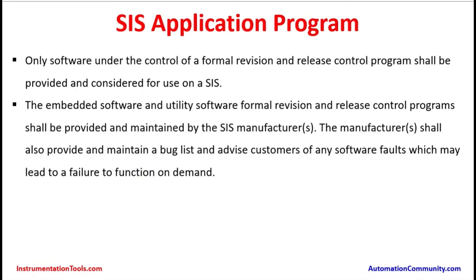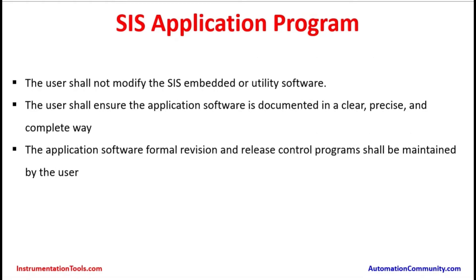The manufacturers always develop the program and test it on their bench. Even after testing, there could be a possibility of a bug in the program when the application is running on the processor. There could be an error which may lead to a particular part of the plant going for a shutdown. If any program bugs are found by the manufacturers, that has to be notified to all respective customers using their products — similar to how Microsoft issues multiple versions for operating system enhancements. The user shall not modify the SIS embedded or utility software because they are pre-configured.